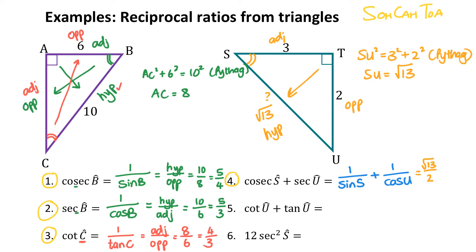According to S, TU will be opposite and ST is adjacent. Cosec of S is hypotenuse over opposite, which is root 13 over 2. Now looking at sec of U: the hypotenuse is still the same, but my opposite is 3 and my adjacent is 2. So sec of U will be hypotenuse over adjacent, which is root 13 over 3. Now you can see why these are called co-ratios — cosec of S and sec of U are exactly the same value when the angles are complementary, adding up to 90. A half of root 13 plus a half of root 13 gives root 13 as the final answer.